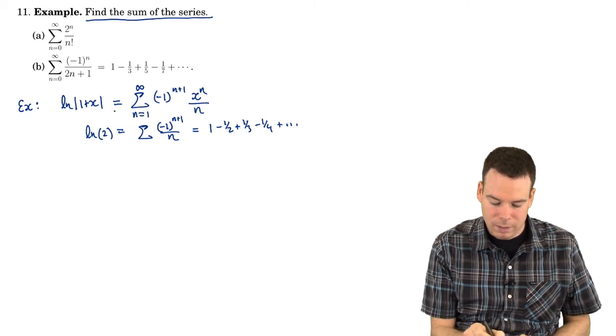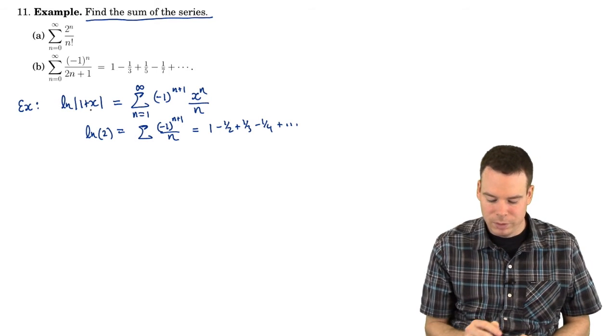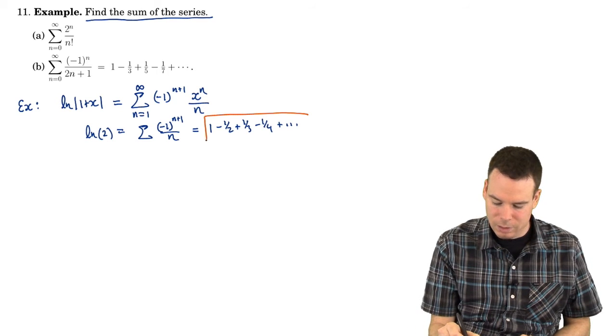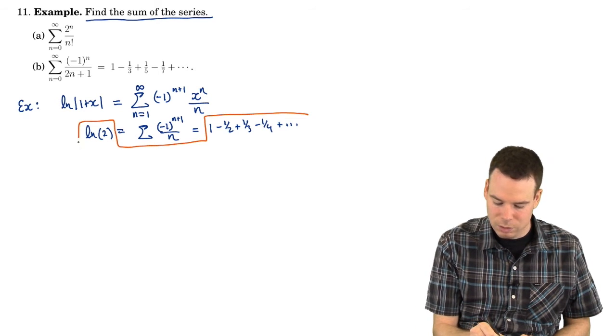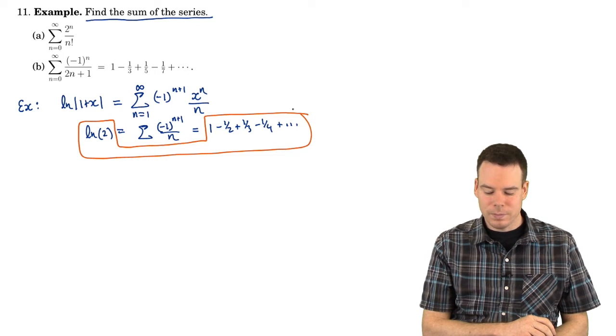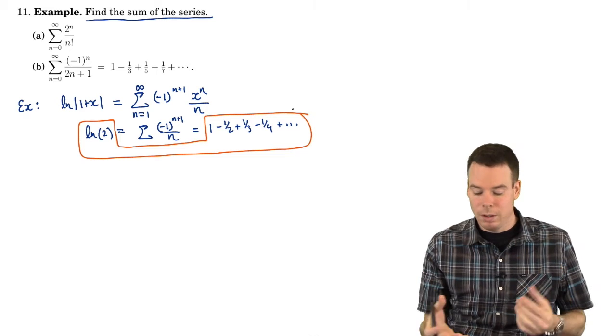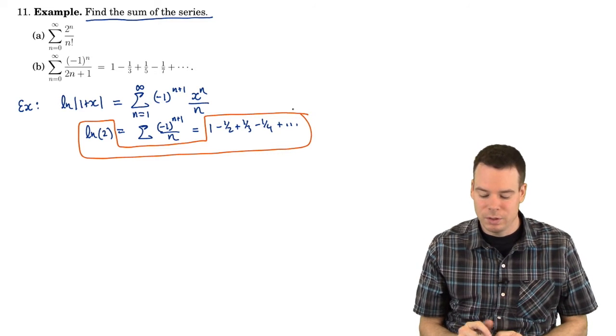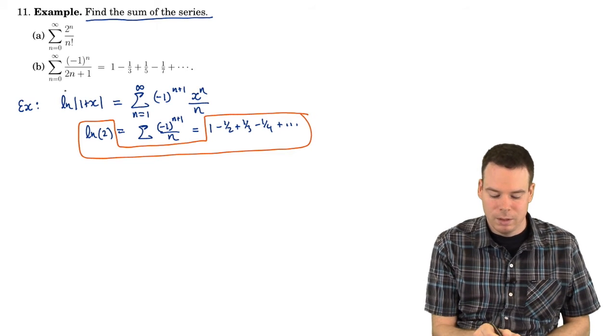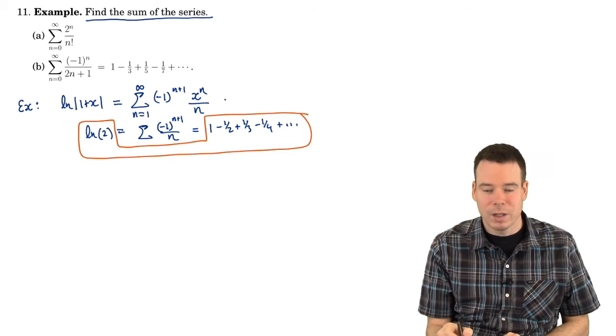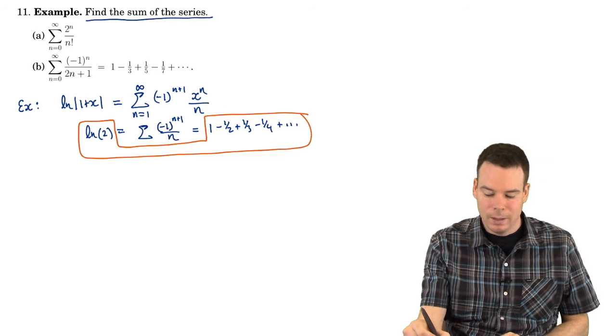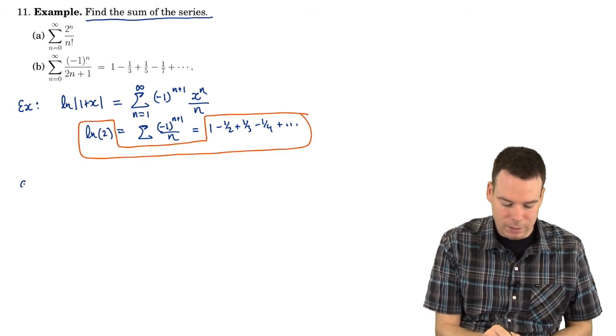From this power series representation of log of 1 plus x we've got out of that that the alternating harmonic series converges to log of 2. So we've known all along that the alternating harmonic series converges. Now we know what it converges to, log of 2. And we got that by realizing some connection with the power series for the logarithm of 1 plus x. That's the same idea that we want to apply in these next couple of examples.